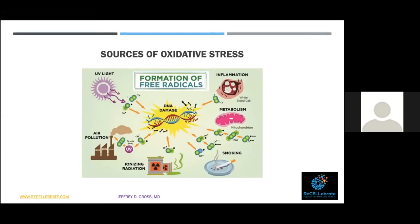Sources of oxidative stress include sunlight, UV light, other types of radiation — consider space travel, where astronauts will experience significant radiation. We also have air pollution, smoking, metabolic issues, and inflammation. At the center of the diagram, oxidative stress and chronic inflammation ultimately damage DNA. When DNA is damaged, the cell eventually goes through apoptosis or cell death — and some cells can convert to cancer. If we protect our DNA, we do better longer.